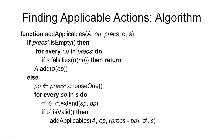Finding the actions that are applicable in a given state is actually a non-trivial problem. You can see this when you think about the number of possible actions that may be applicable — namely all those operator instances where you replace every parameter by every possible value. That would give you an exponential number of actions. In general, there are far fewer actions applicable in a state. Here is an algorithm you can use to find the applicable instances of a given operator in a given state.